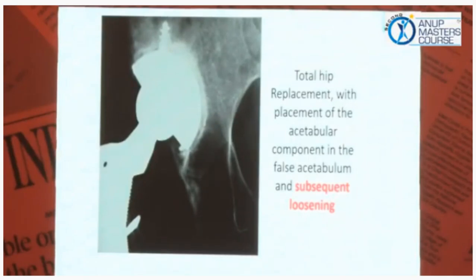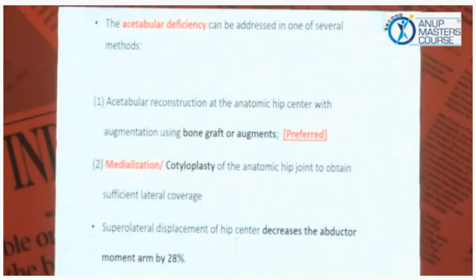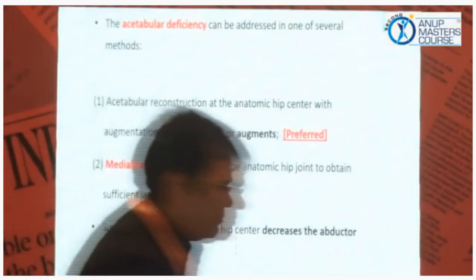Placing the component in the false acetabulum looks nice, but the bone is very soft and it quickly becomes loose, so this temptation should be avoided. The acetabular deficiencies can be addressed by reconstruction at the anatomic hip center with augmentation using bone graft or augments. In type 1 and type 2, we can do only medialization of the anatomic hip joint to obtain sufficient lateral coverage. Superolateral displacement of the hip center decreases the abductor moment arm by 28 degrees.